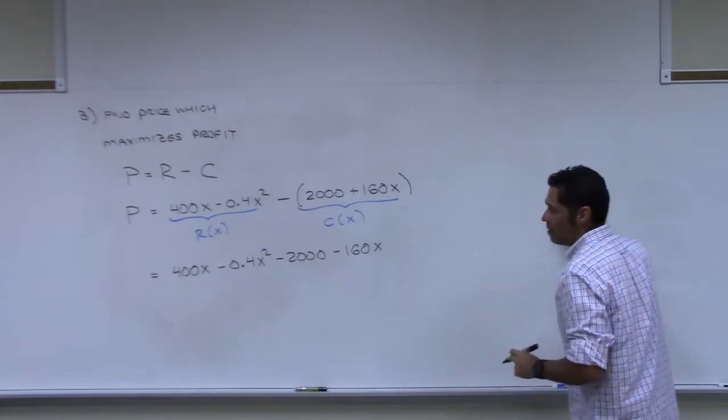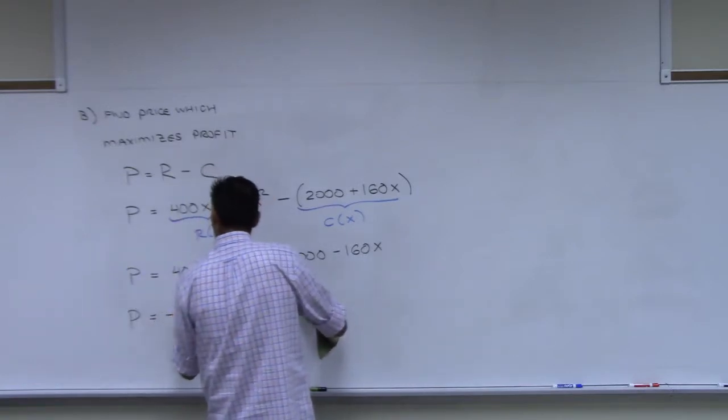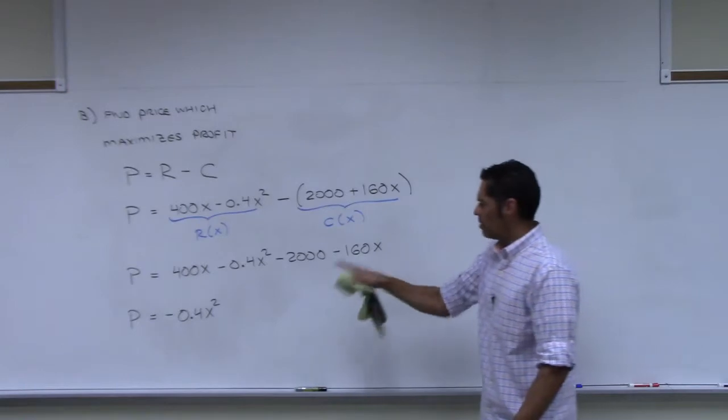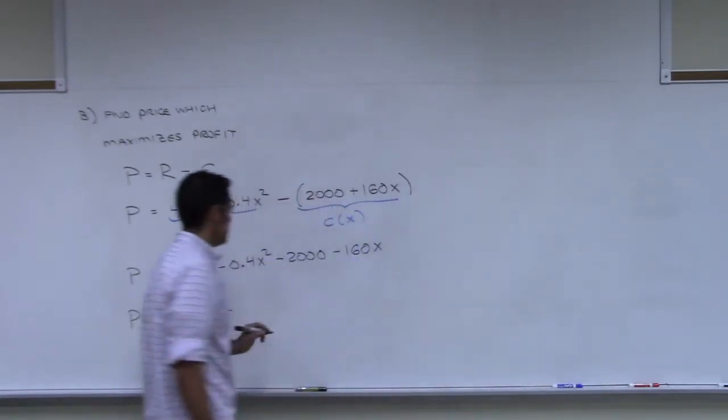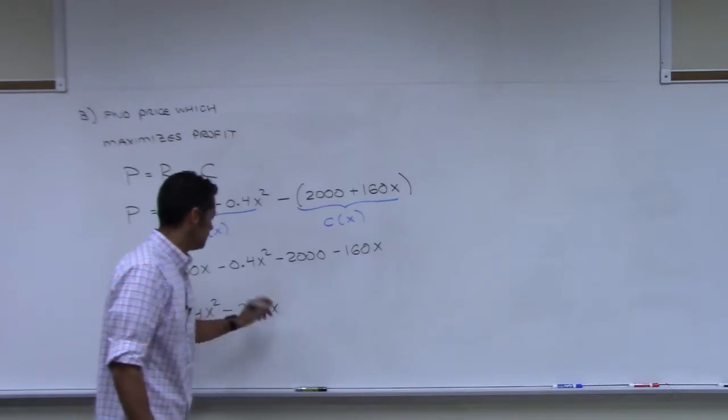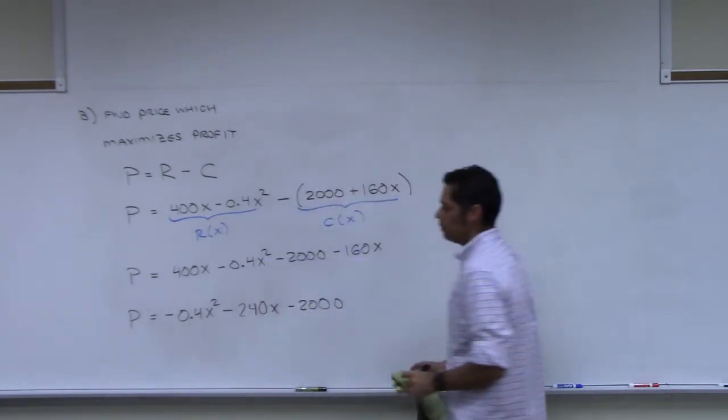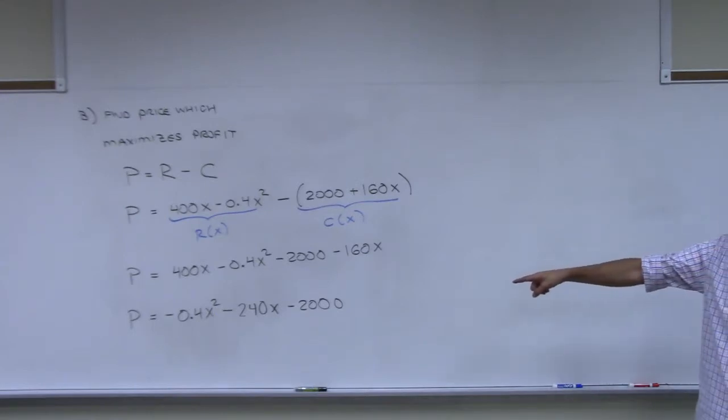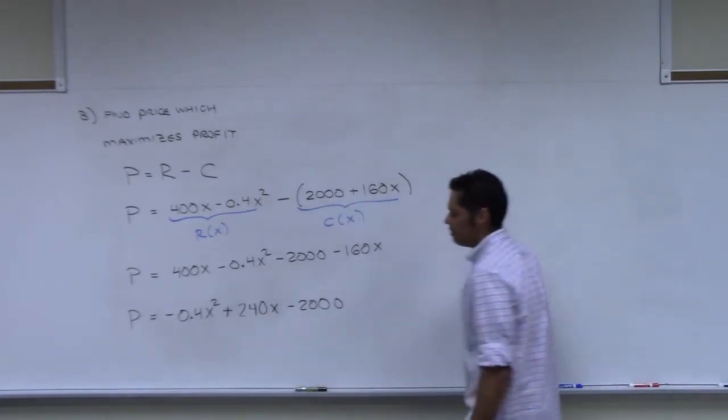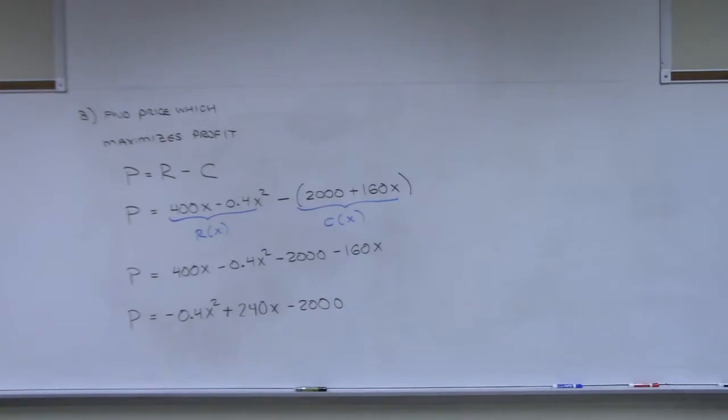And we will have a final version of our profit function. And I'm going to, when I write my profit function down right now, I'm going to put it in descending order. So my profit is this. My profit is, I have negative 0.4x squared. How many x's do I have? So negative 400 take away 160. 240x. And then finally minus 2,000.